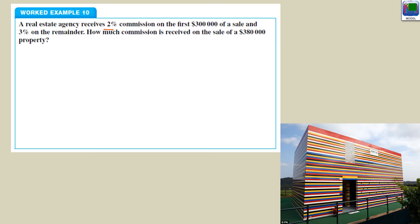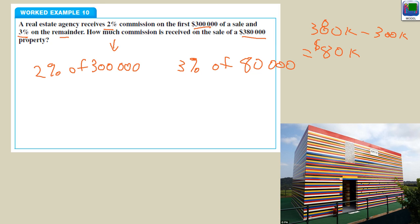The real estate agent gets 2% commission on the first $300,000 of a sale. So the first $300,000 of the house they sell, 2% of $300,000. And then 3% on the remainder. Now, the sale is $380,000. So, here's the first $300,000. She then gets 3% of what's left. What's left? $380,000 is what it's sold for. $380,000 minus $300,000 must be $80,000 left over.